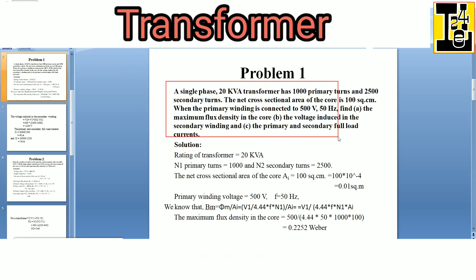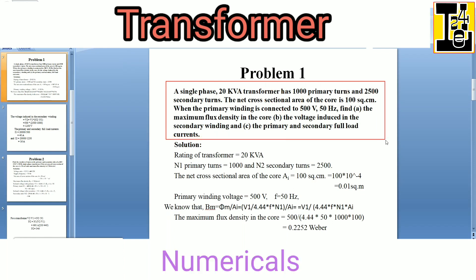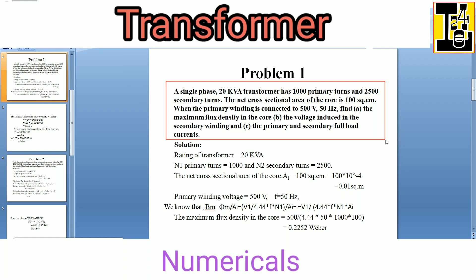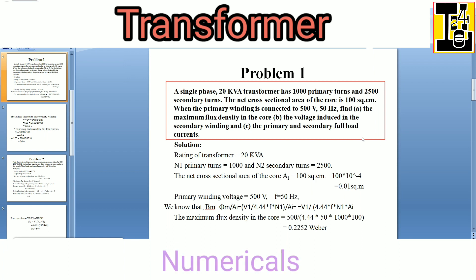The problem statement is: a single phase 20 kVA transformer has 1000 primary turns and 2500 secondary turns. The net cross sectional area of the core is 100 square centimeter. When the primary winding is connected to 500 volt, 50 hertz supply, find: first, the maximum flux density in the core.